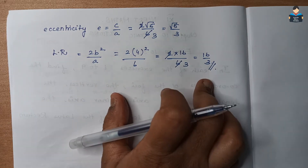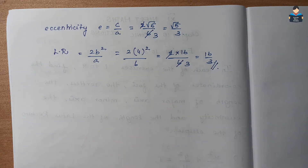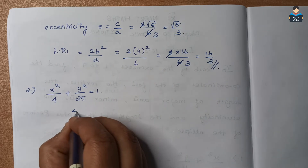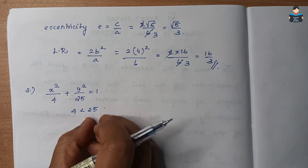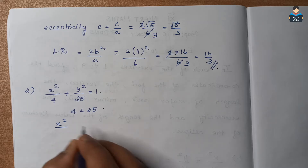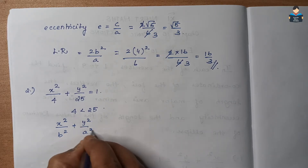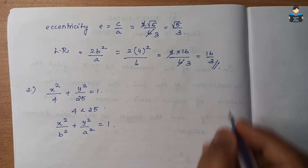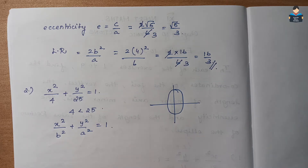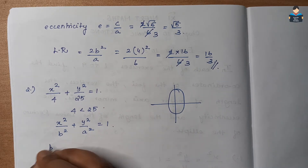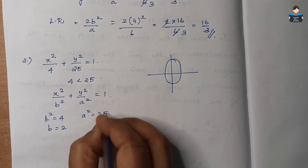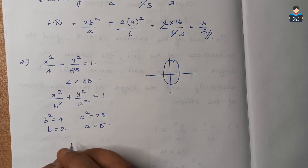Now the second question: x² / 4 + y² / 25 = 1. Since 4 is less than 25, the major axis is along the y-axis. This is a vertical ellipse, so we compare with x² / b² + y² / a² = 1. Thus b² = 4, b = 2, a² = 25, a = 5.